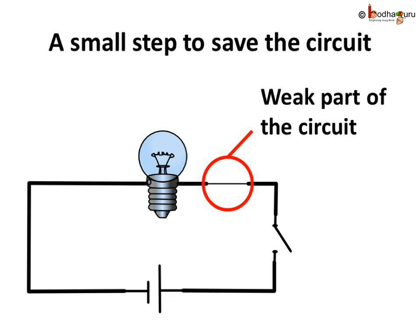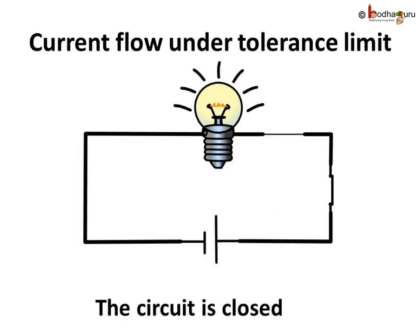It can be a small piece of wire which can be a part of the circuit, and we can replace it once it gets burnt, saving other parts of the circuit. So we shall insert a small piece of wire in the circuit. This wire is weaker — its tolerance limit for the current is lower than the other parts of the circuit. Hence, it gets damaged and stops the flow of current before other parts of the circuit get damaged.